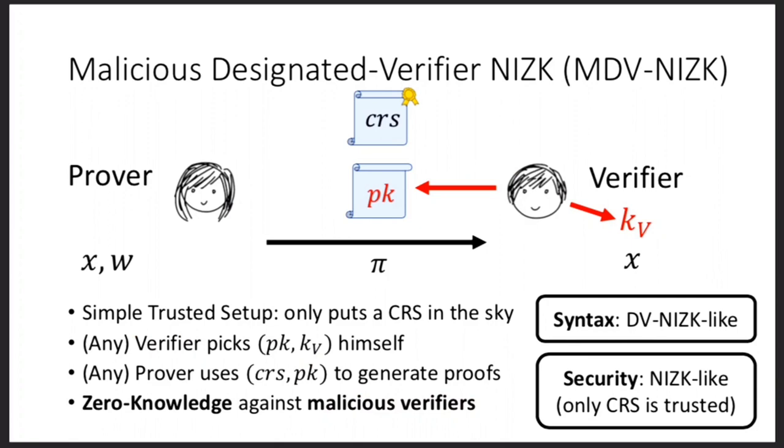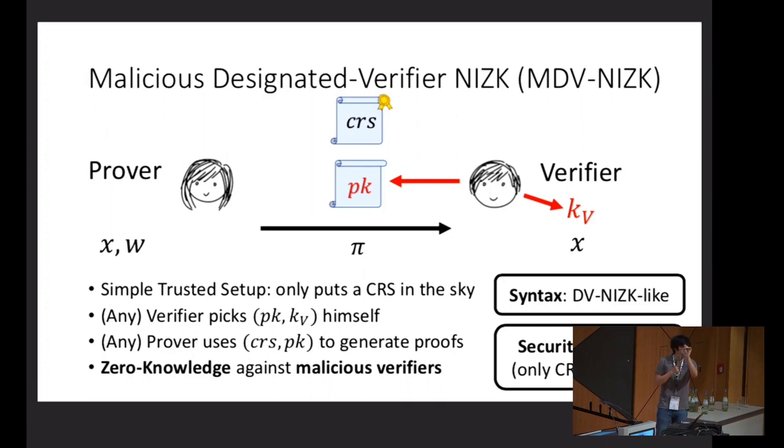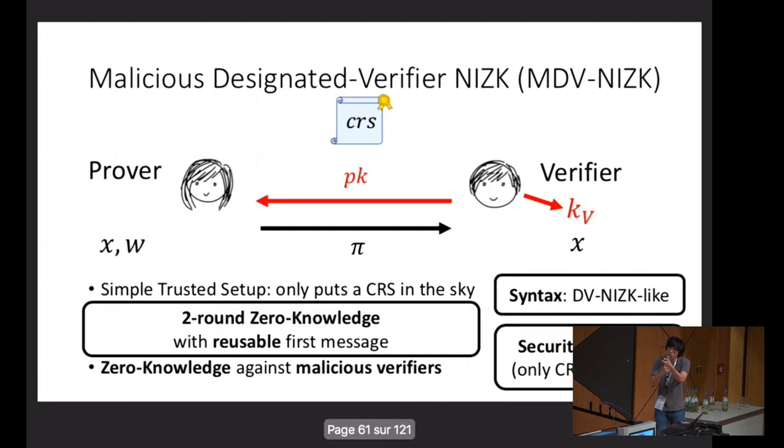Just a quick remark. This is the notion of malicious designated verifier NIZK, or MDV-NIZK. If I just rewire the arrow, another way you can look at that is really that we have some kind of two-round zero-knowledge protocol. But what makes it really interesting is that the first message is reusable. That's really what gives this non-interactivity flavor. The natural question is how do we build that?